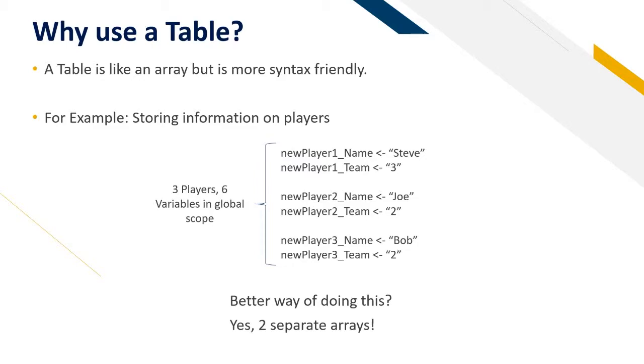So we have three players. We have their name and their team. Between three players there's two variables. This means there's six variables in the global scope. Is there a better way to manage this?